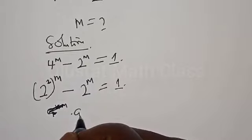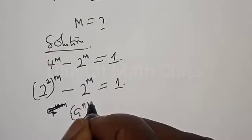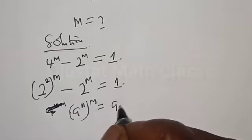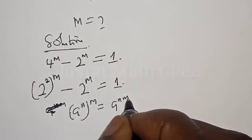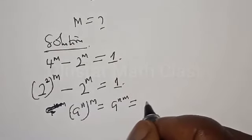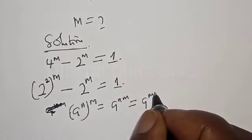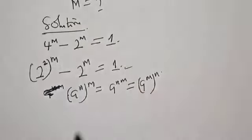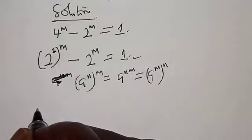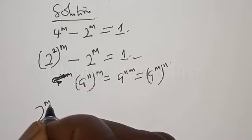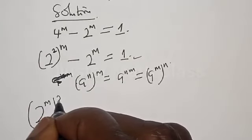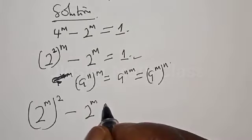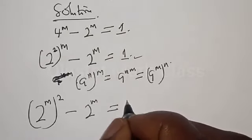Remember, if you have a raised to power m, raised to power n, it is the same thing as a raised to power m times n. From here, we have 2 raised to power m squared minus 2 raised to power m equal to 1.